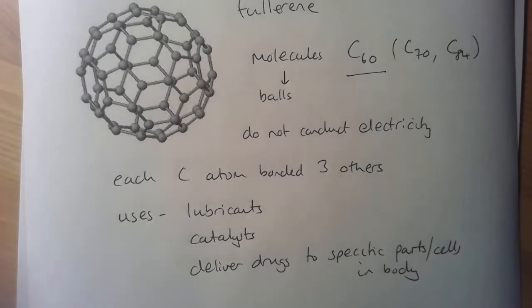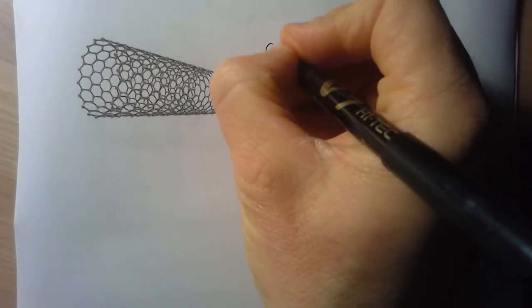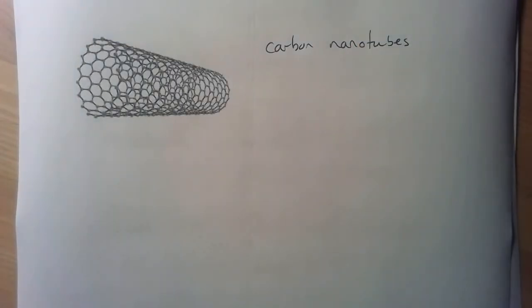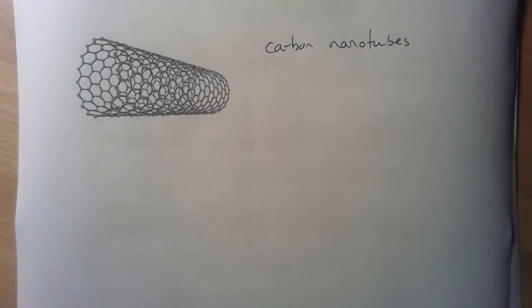So I'm going to look now at our final form of carbon that we need to know about, and that is carbon nanotubes. Again, I'm using a picture because it would be quite difficult to draw. It would take me a long time to draw. So carbon nanotubes.